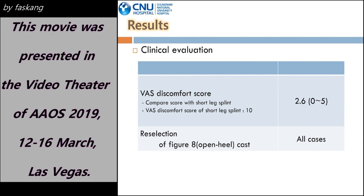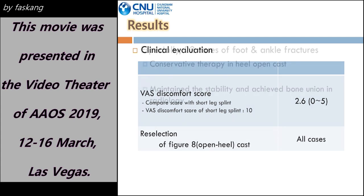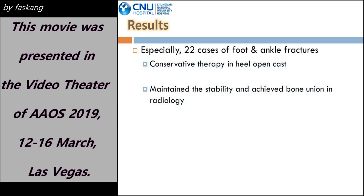When the score of the short leg splint is set to 10, the VAS discomfort scores of the open-heel cast that patients felt were 0 to 5 with an average of 2.6, and all patients answered that they will use the open-heel cast if they need a cast in the future. In particular, 22 cases among the foot and ankle joint fractures were performed under conservative treatment with the heel-open cast, and a successful bony union was obtained.